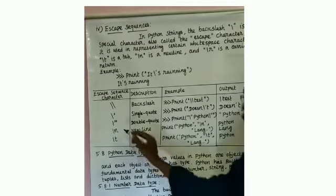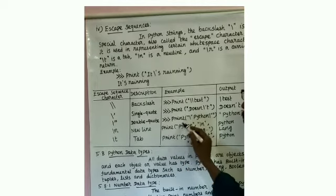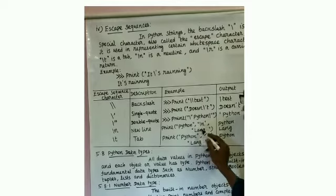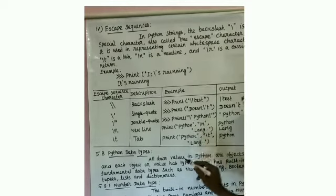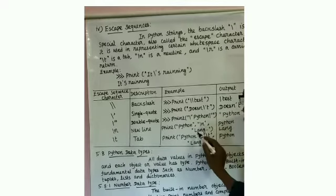Next, \n — new line. Print 'python', comma \n — \n means a new line. Next double quotation 'long' — \n means new line. How it will be displayed: 'python' on the first line, then 'long' on the next line.